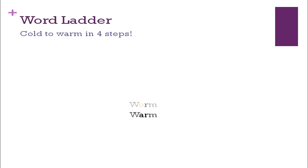Now, word ladder. This is another game you can play with students or friends to develop vocabulary — from 'warm' to 'cold' in four steps. At each step, change one letter to create a new meaningful word. By changing A to O, 'warm' becomes 'worm'. Changing M to D gives 'word'. Changing W to C gives 'cord'. Finally, changing R to L gives 'cold'. So from warm to cold. You can play such a game with other words.